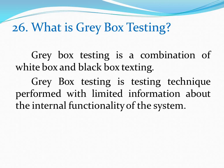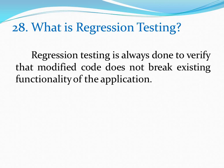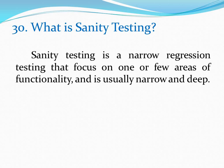What is gray box testing? Gray box testing is a combination of white box and black box testing. It is a testing technique performed with limited information about the internal functionality of the system. What is retesting? Retesting is testing of a particular bug after it has been fixed. What is regression testing? Regression testing is always done to verify that modified code does not break existing functionality of the application. What is smoke testing? Smoke testing is a cursory, shallow and wide approach whereby all areas of the application are tested without getting into too deep. What is sanity testing? Sanity testing is a narrow regression testing that focuses on one or few areas of functionality and is usually narrow and deep.